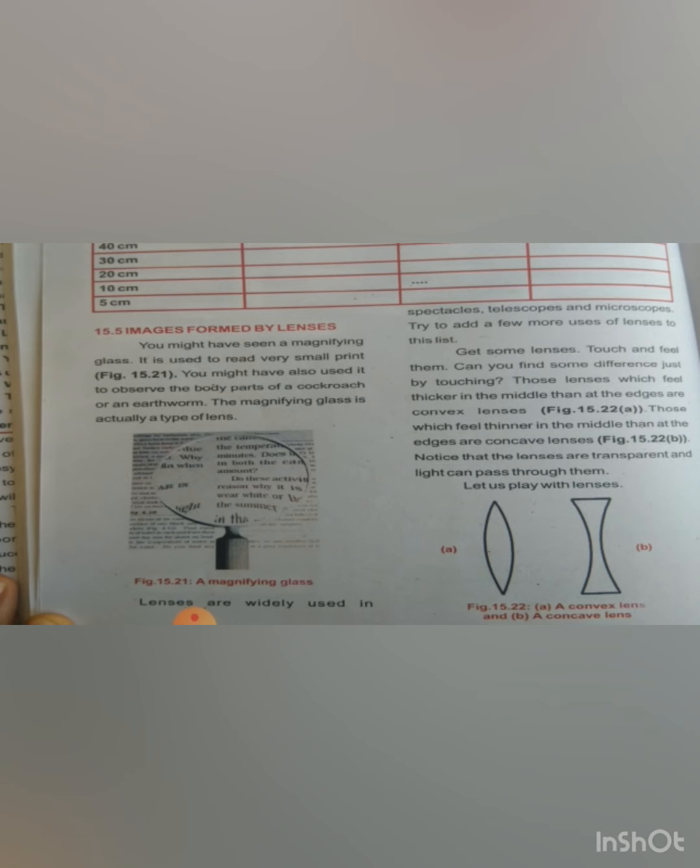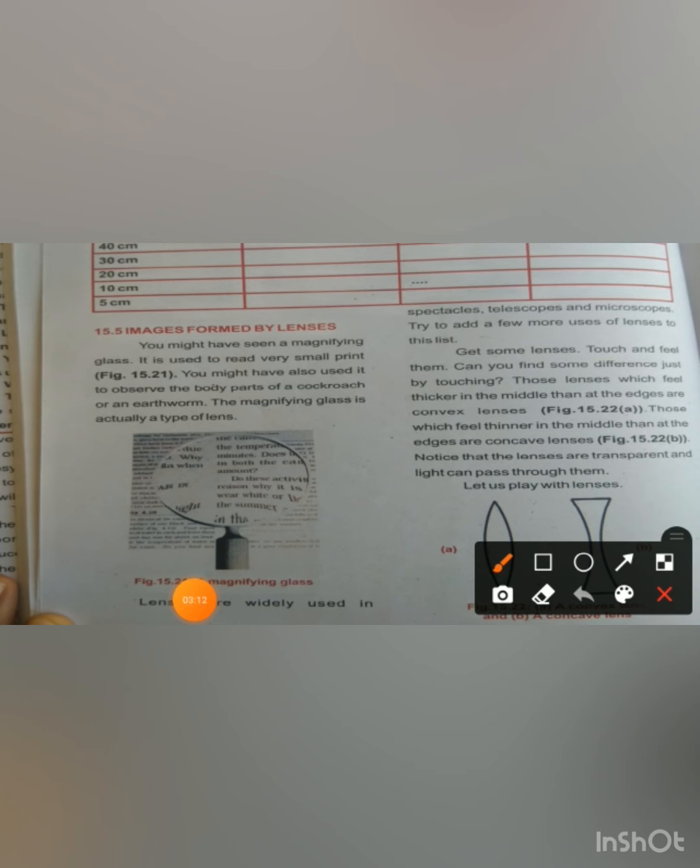Then we will discuss concave lenses. A concave lens is one that is thin in the middle but thicker at the edges. So by touch alone you can identify which type of lens it is — concave lens (thinner in the middle, thicker at edges) or convex lens (thicker in the middle, thinner at edges).